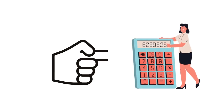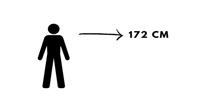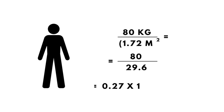Here is an example. If a person measures 172 centimeters in height and weighs 80 kilograms, the BMI would be calculated as 80 kilograms divided by the square of 1.72 meters, which would result in a BMI of 27.